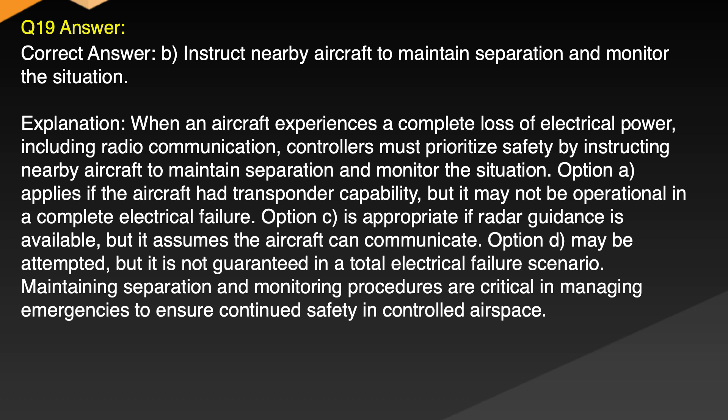Explanation: When an aircraft experiences a complete loss of electrical power including radio communication, controllers must prioritize safety by instructing nearby aircraft to maintain separation and monitor the situation. Option A applies if the aircraft had transponder capability but it may not be operational in a complete electrical failure. Option C is appropriate if radar guidance is available but it assumes the aircraft can communicate. Option D may be attempted but it is not guaranteed in a total electrical failure scenario. Maintaining separation and monitoring procedures are critical in managing emergencies to ensure continued safety in controlled airspace.